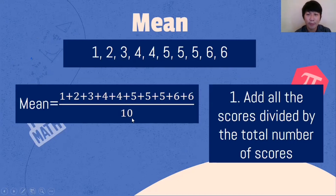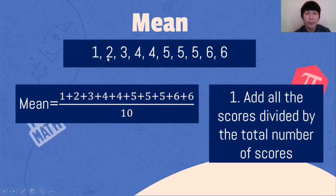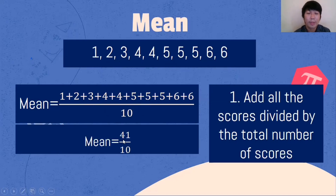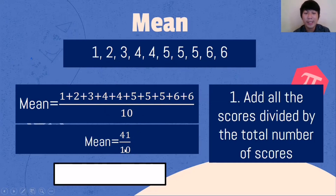Let's now solve for the mean. Add all the scores divided by the total number of scores. How many scores do we have? 1, 2, 3, 4, 5, 6, 7, 8, 9, 10 — so we have 10 scores. We add 1 + 2 + 3 + 4 + 4 + 5 + 5 + 5 + 6 + 6 = 41, over 10. What is 41 divided by 10? That is 4.1. That is the mean of the scores.